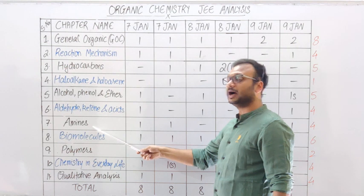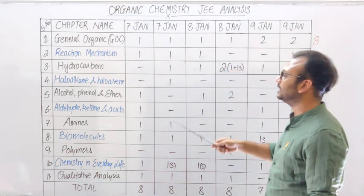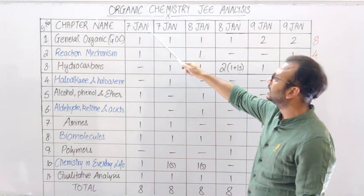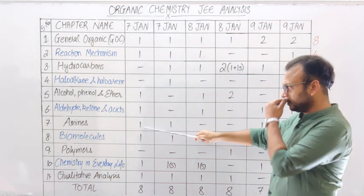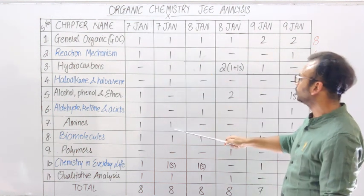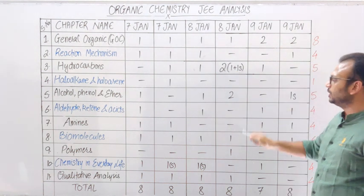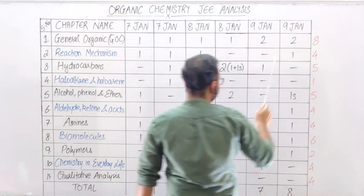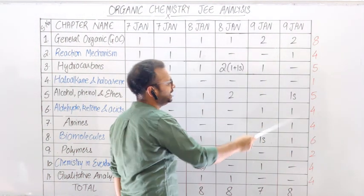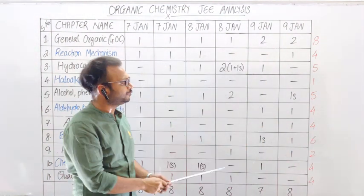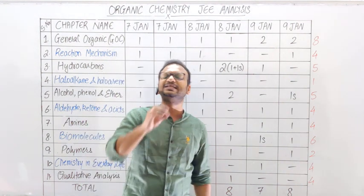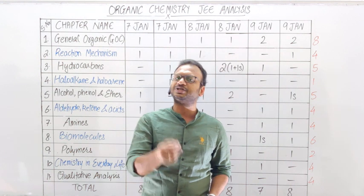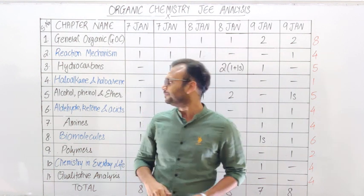Next आएगा Amines, यानि Nitrogen Containing Compounds। 7th January Morning और Evening Shift में कोई question नहीं आया, 8th January Morning और Evening दोनों shifts में भी कोई question नहीं आया, 9th January Morning Shift में 1 question, Evening Shift में भी 1 question। Total 4 questions — यानि किसी-किसी paper में 1 question आएगा, किसी-किसी set में एक भी question नहीं आएगा।